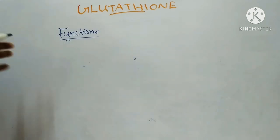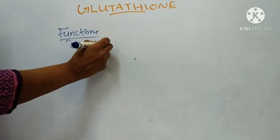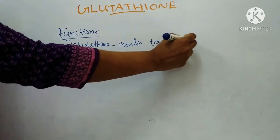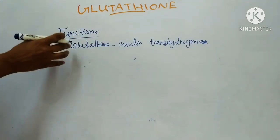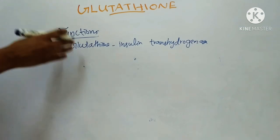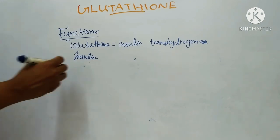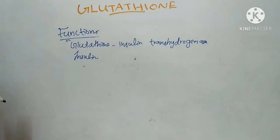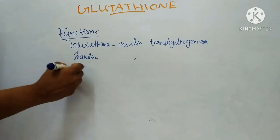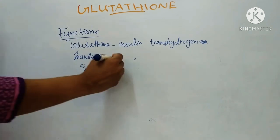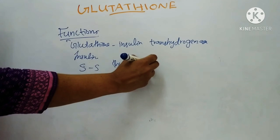Another function is that glutathione acts as a co-enzyme with the liver enzyme glutathione insulin transhydrogenase. This enzyme helps in the catabolism and degradation of insulin. Additionally, glutathione and the enzyme glutathione transhydrogenase cause reductive cleavage of disulfide linkages in thyroglobulin glycoprotein.